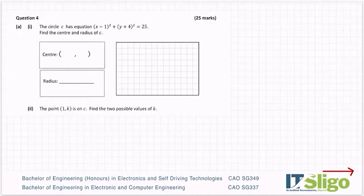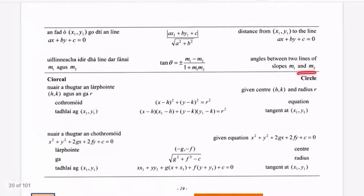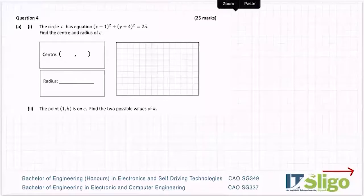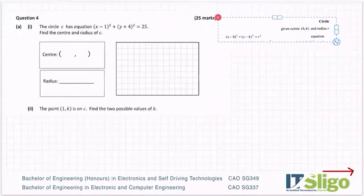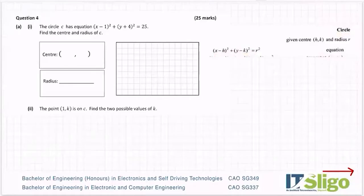In the log tables, coordinate geometry section — which has slope, midpoint, and all those pages — if you flick on another page you'll see there's a circle section. This is what you need to answer these questions. I'm copying it over here. You can see there is an equation of a circle, and it explains what they are: h, k is the center and the radius is r.